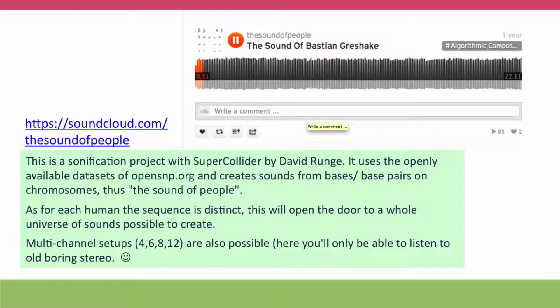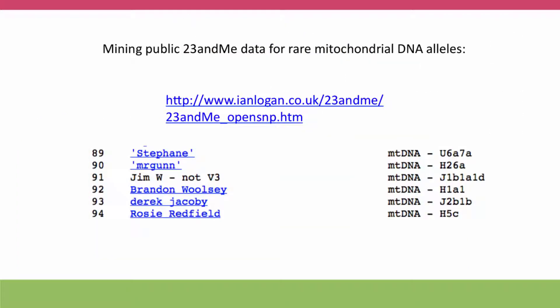The music that you hear is actually computer-generated music generated from this person's SNP sequence. Each note corresponds to a different base or a different pattern of bases. People have also mined the public 23andMe data looking for rare alleles that weren't flagged in the formal SNP analysis — for example, they found a number of examples of mitochondrial alleles that were relatively rare in the broader population.